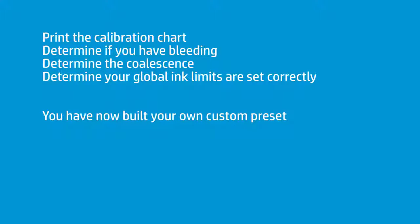Then you would go through the three steps, and they're very clear and very simple. You print the calibration chart. You determine if you have bleeding. You determine if you have coalescence. And you determine if you have your global ink limits correctly. The next two charts are automated — you just hit color calibrate, then ICC profile, and you're good to go. You have now completely built a custom preset for your specific media.